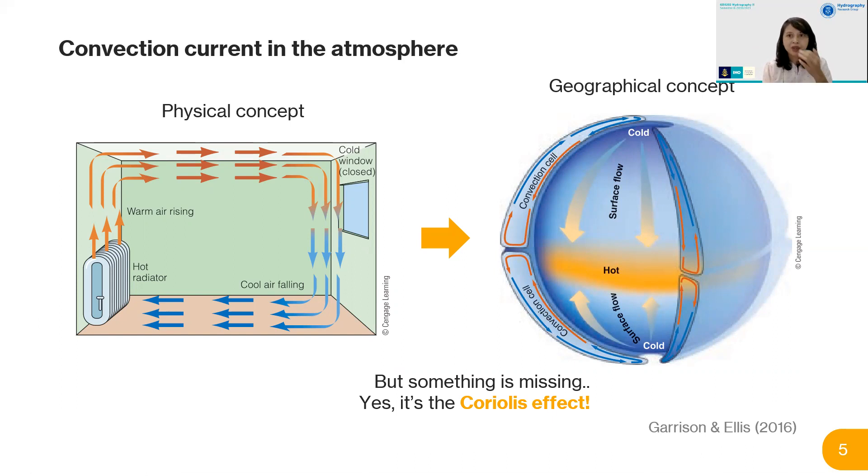The Coriolis effect occurs because our earth is spinning counterclockwise. Everything, including the air, is deflected—in the north it's deflected to the right, and in the south to the left. So instead of continuing all the way up, the air track is deflected back and falls down somewhere on our earth, then goes back and gets deflected again.